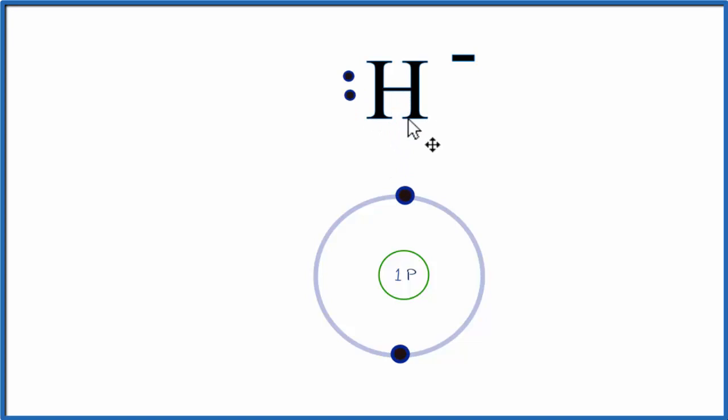We should put brackets around this to show that it's an ion. That would be the complete Lewis structure for the hydride ion. Notice I've put both of these electrons on one side of the hydrogen atom. That's done because we have this first energy level, it's called the 1s2, and the two are together.